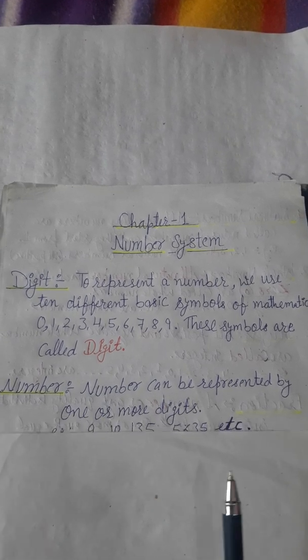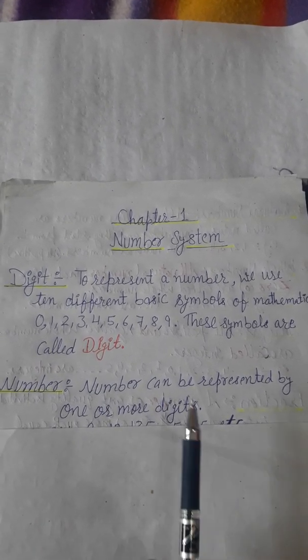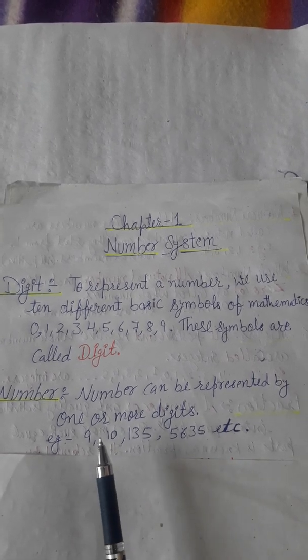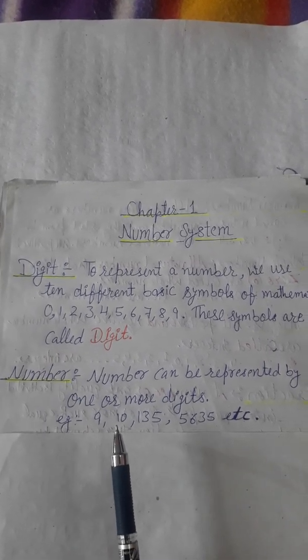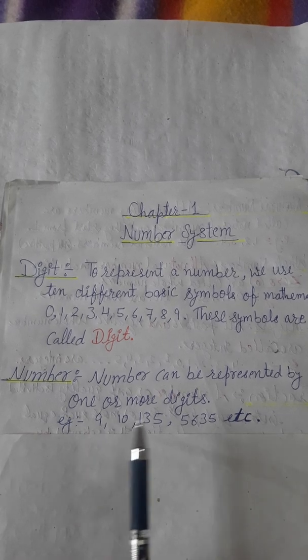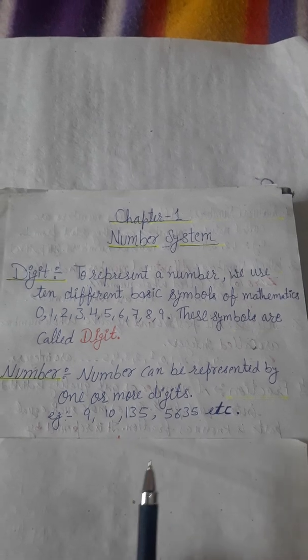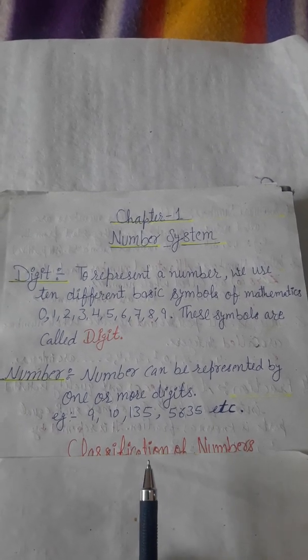For example, you can see 9 is a single digit, 10 has two digits. So 9, 10, 135 are examples of numbers.